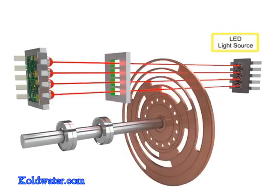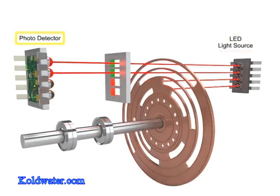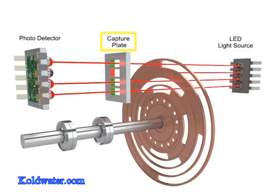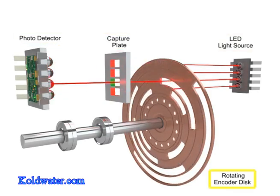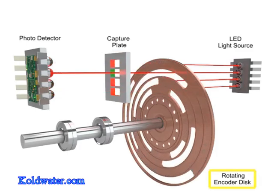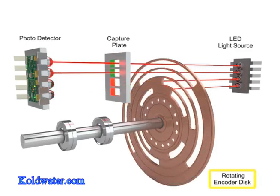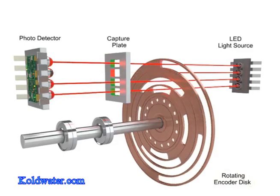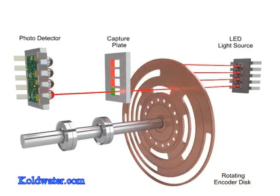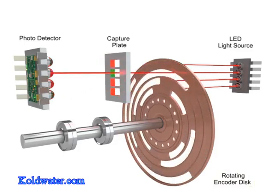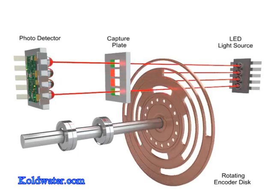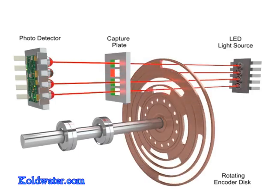A light source located on the opposite side of the photocells passes light through a capture plate. As the encoder disk rotates, light is either transmitted or blocked according to the pattern. The received light provides a four-bit word that indicates the position of the actuator or device the encoder is mounted to.